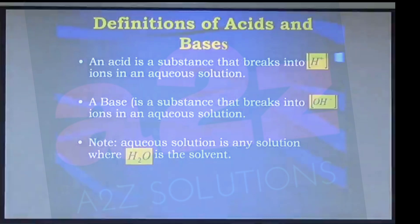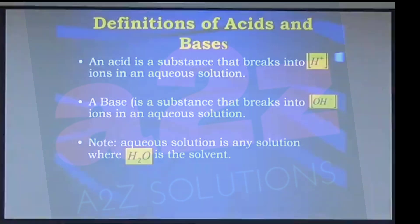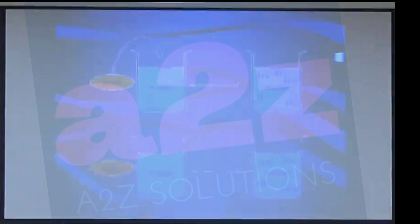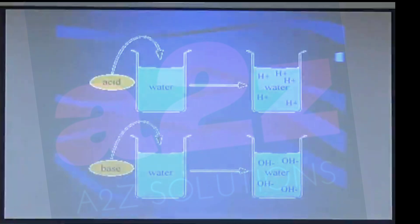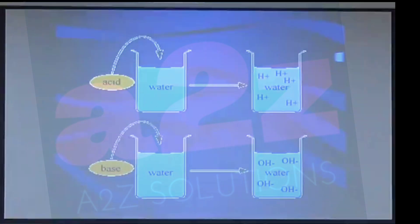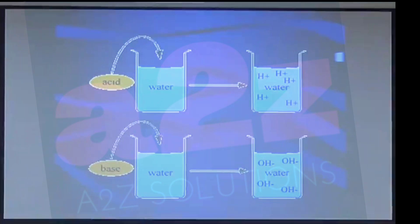Similarly, a base on dissolution in water gives hydroxyl ions. So when you put a base in water, we say an aqueous solution of base is formed. This is a diagrammatic representation: when you put acid in water it forms hydrogen ions, and when you put base in water it forms hydroxyl ions. So acids furnish hydrogen ions in water and bases furnish hydroxyl ions in water, and on this basis we categorize them as acids and bases.